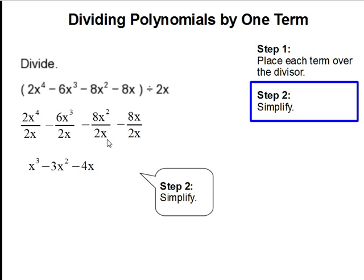8x to the second divided by 2x is 4x, then 8x divided by 2x is 4, and again don't forget to bring down the subtraction sign.